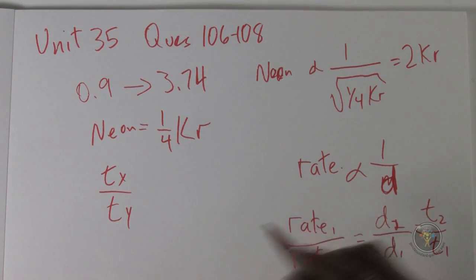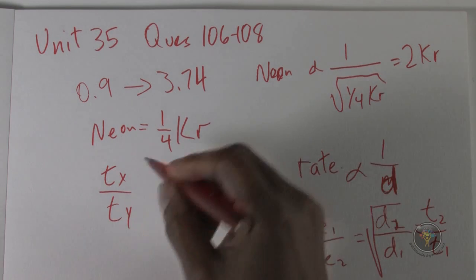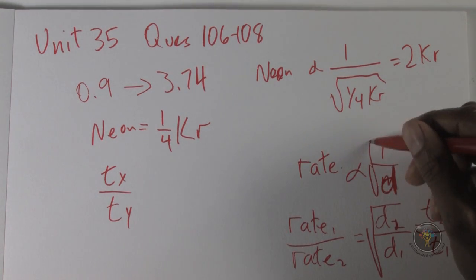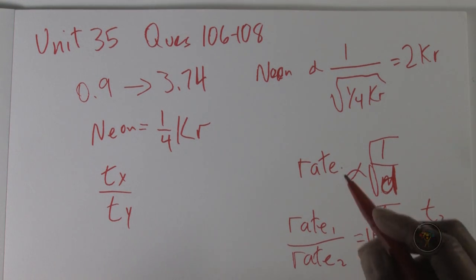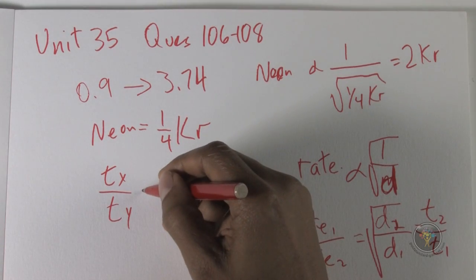So tx over ty, and of course this is square root, so this is also square root. I don't have to put it on the one, I could have just kept it on the d either way. But tx over ty is therefore equal to the square root of dx over dy.